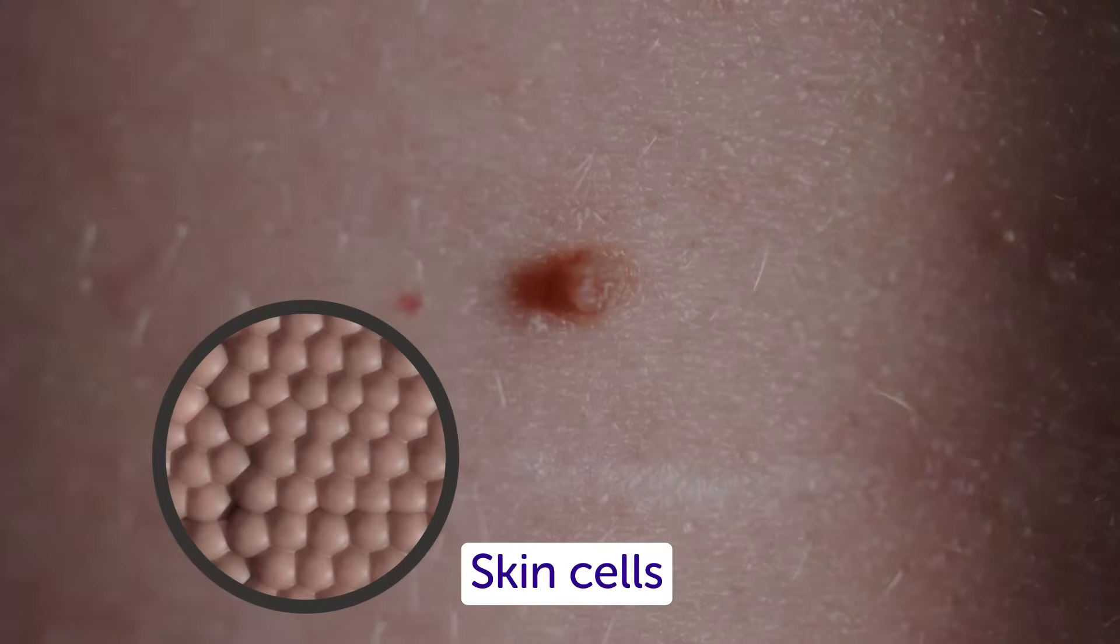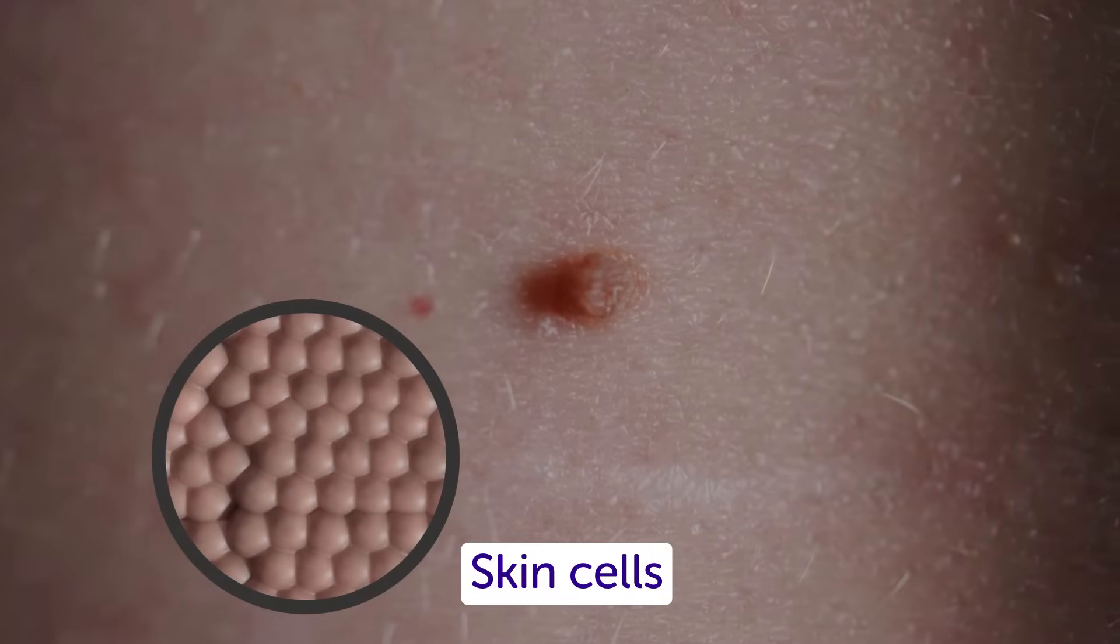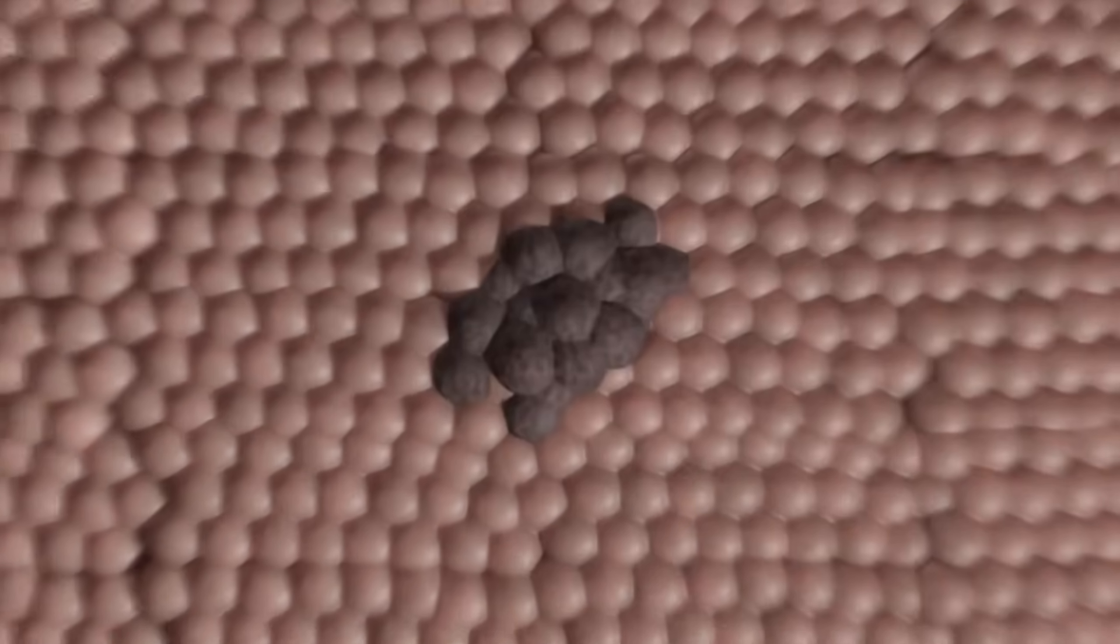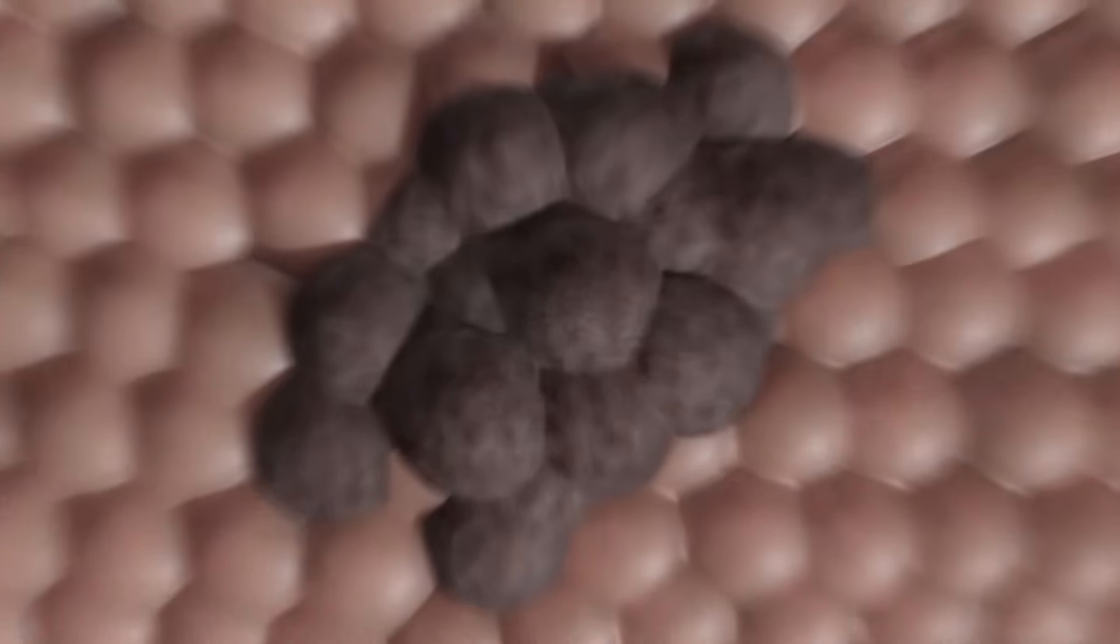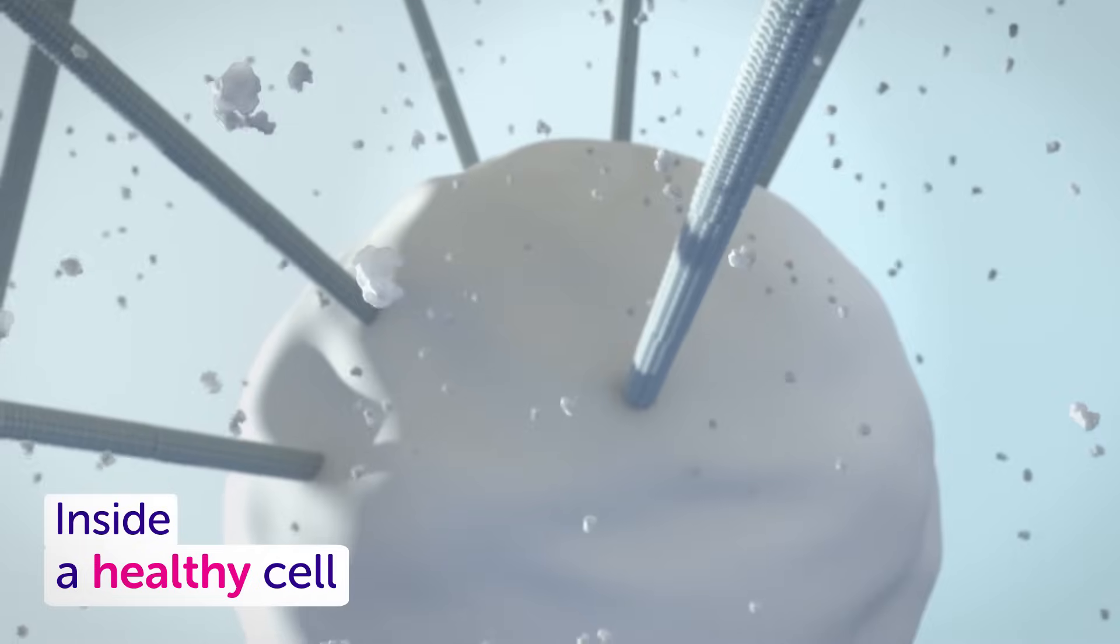Our bodies are made of cells, and cancers start when they grow out of control. This happens when the molecules inside the cells misbehave.